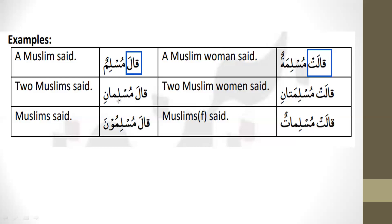Then we have qala muslimani — again hua form, masculine, with outside doer muslimani, which is masculine dual. And with hia we have qalat muslimatani — two Muslim women said. Then the plural form: qala with muslimuna — the outside doer is masculine plural. Qala muslimuna means 'Muslims said.' And with hia form, qalat muslimatun — female Muslims said. These are the examples to show how it works.